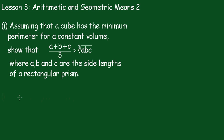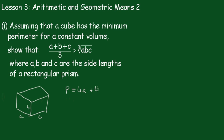I'll draw a rectangular prism here so we have a better idea of what's going on. The sides are a, b, and c. The perimeter will be equal to 4 lots of a's, 4 lots of b's, and 4 lots of c's, which is 4(a + b + c). The volume of this prism is simply abc, and that's a constant, say k.